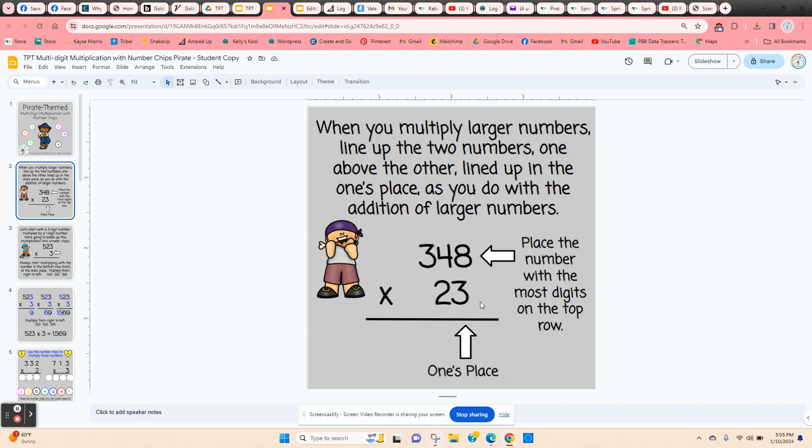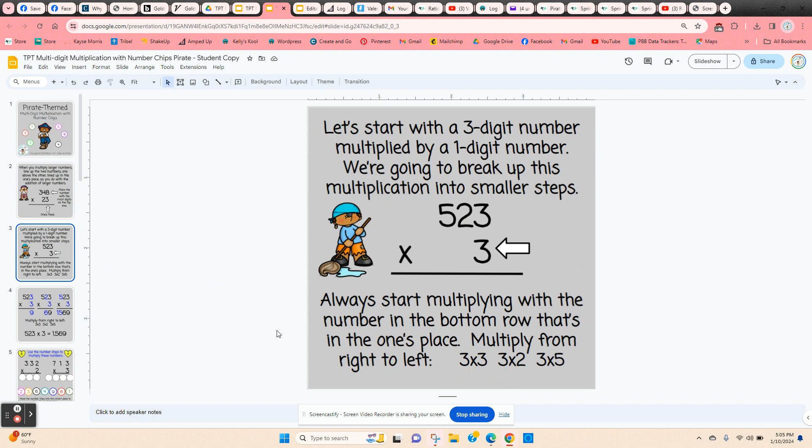Line up in the ones place, and if they're multiplying you want to make sure that the number with the least number of digits is in the second row. Here they're going to be multiplying from right to left: 3 times 3, 3 times 2, and then 3 times 5, right to left.